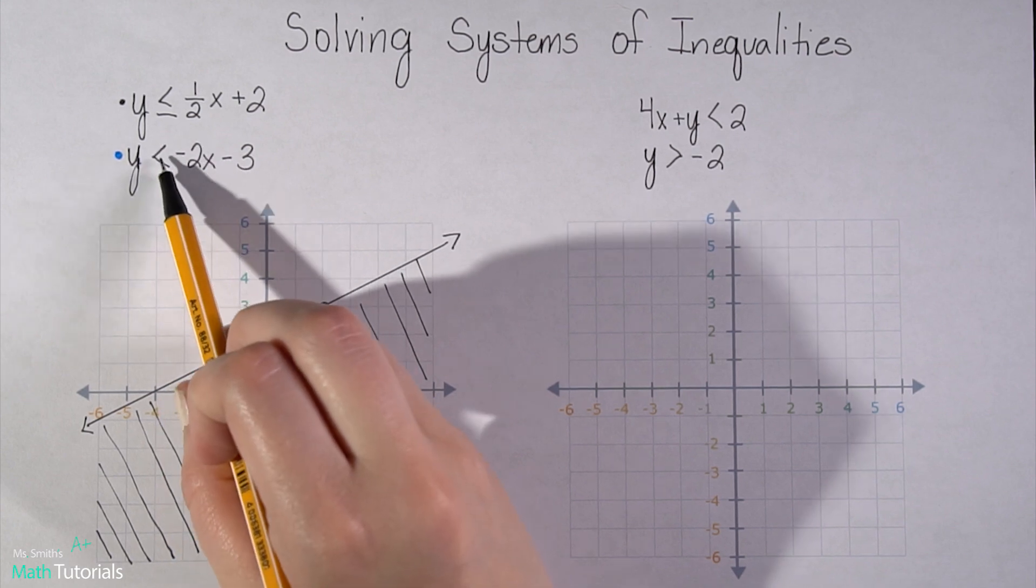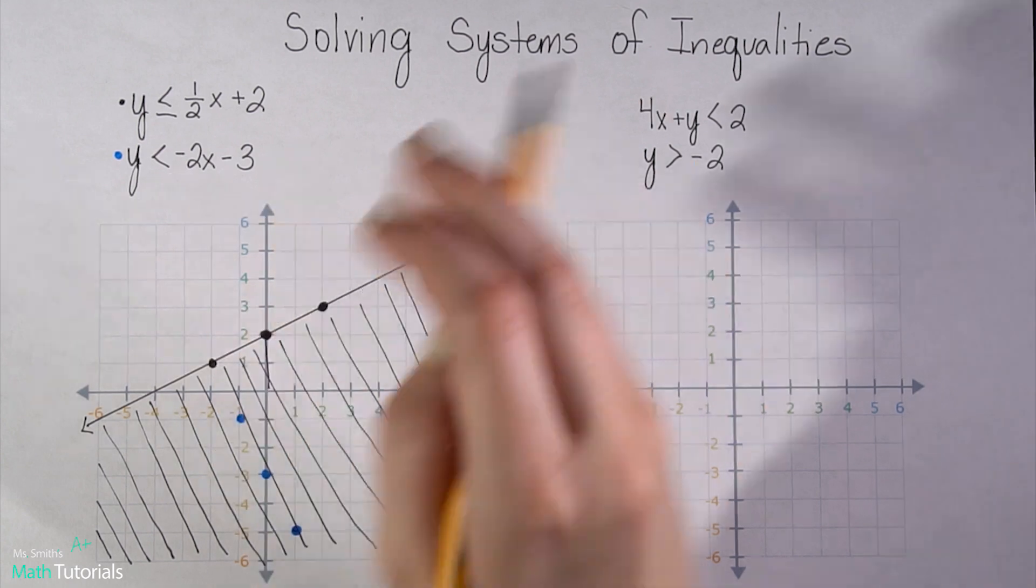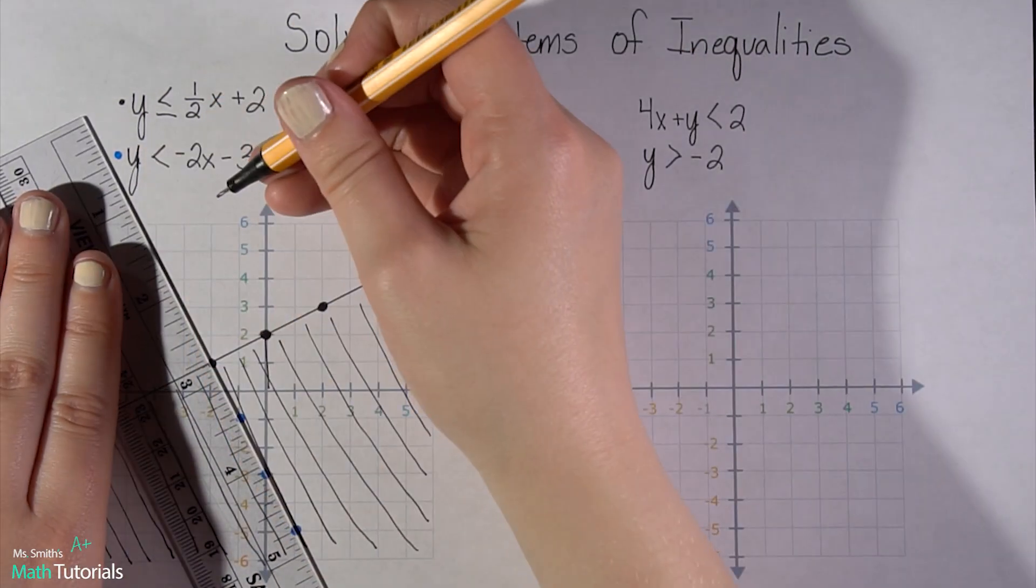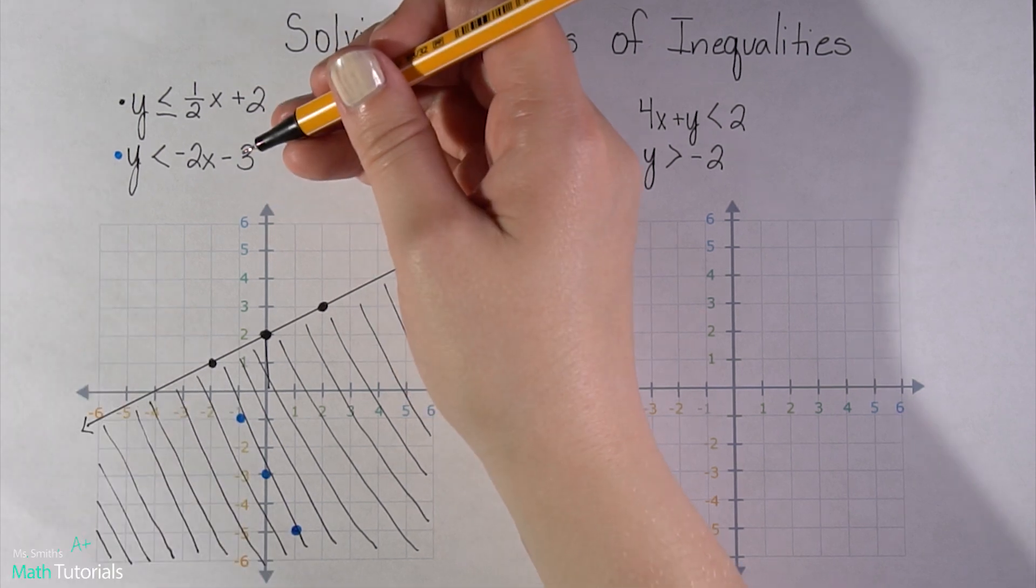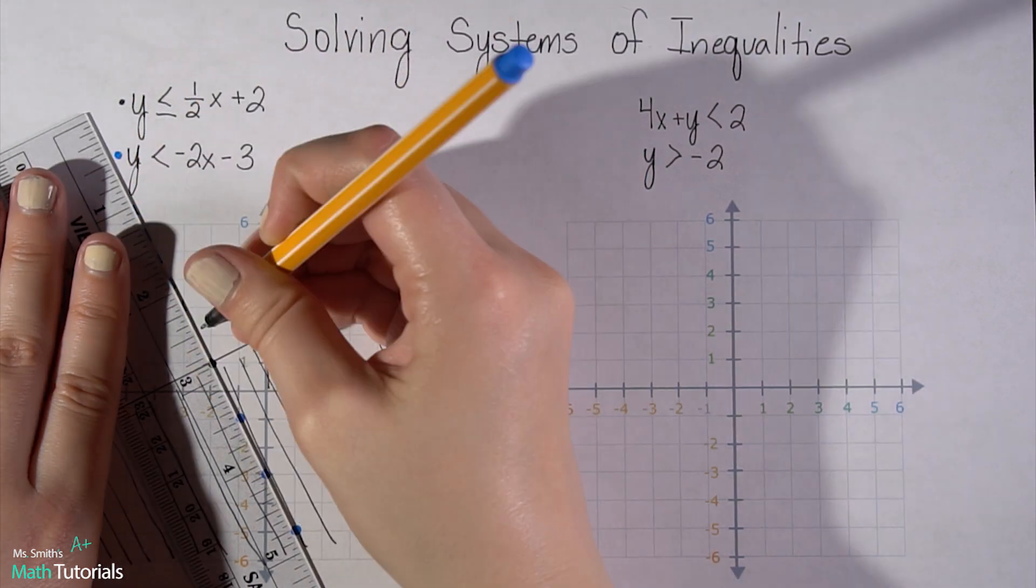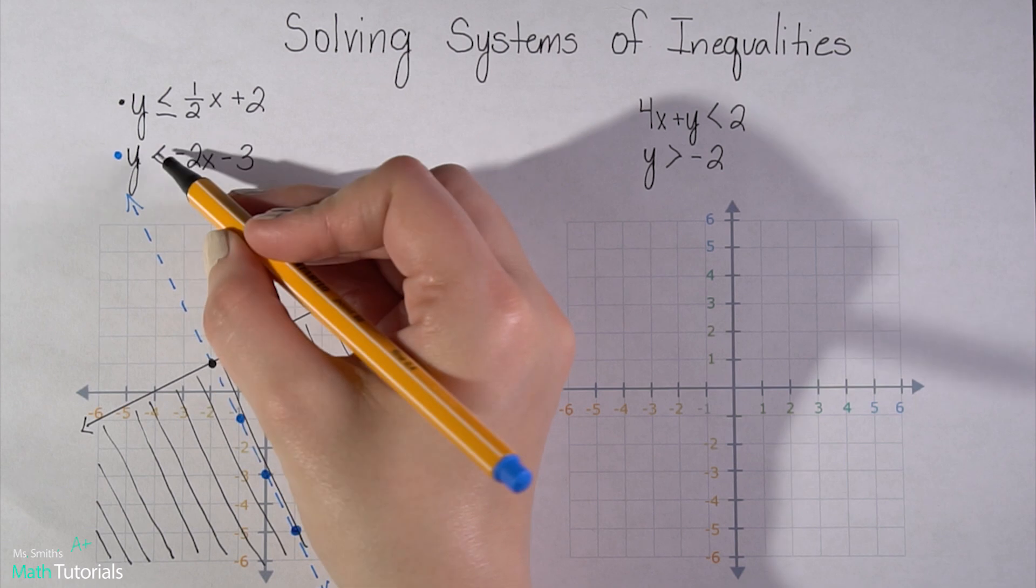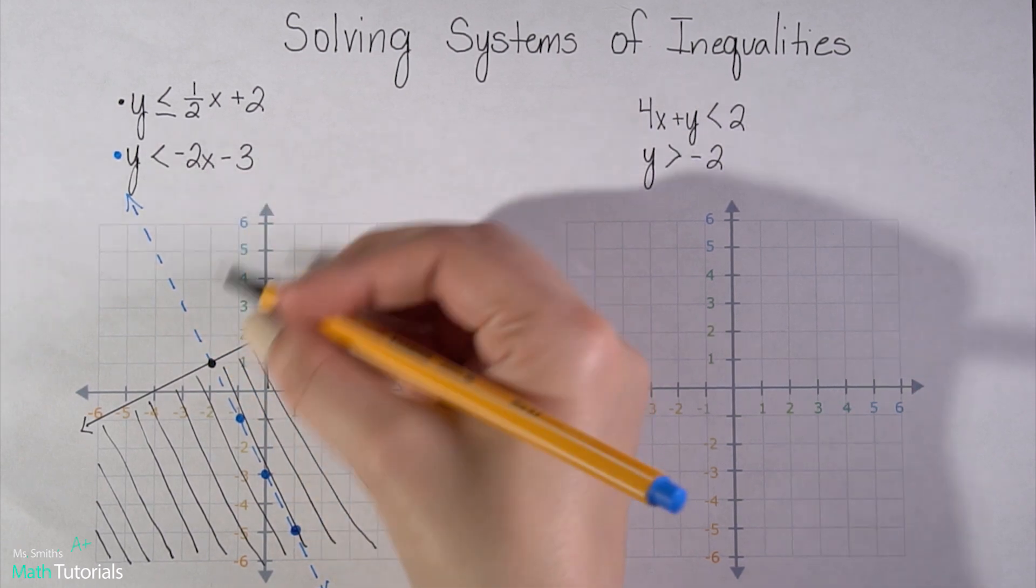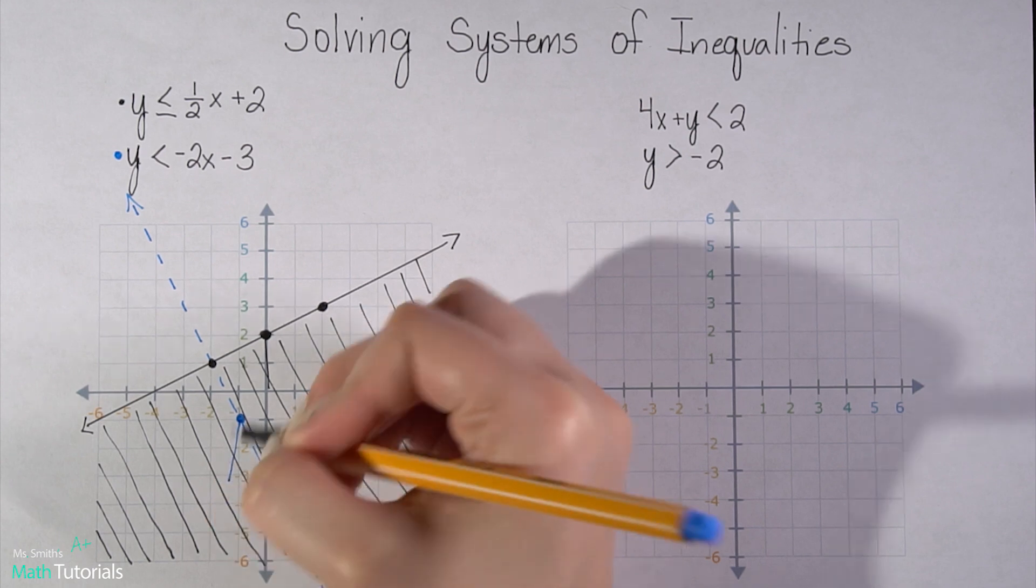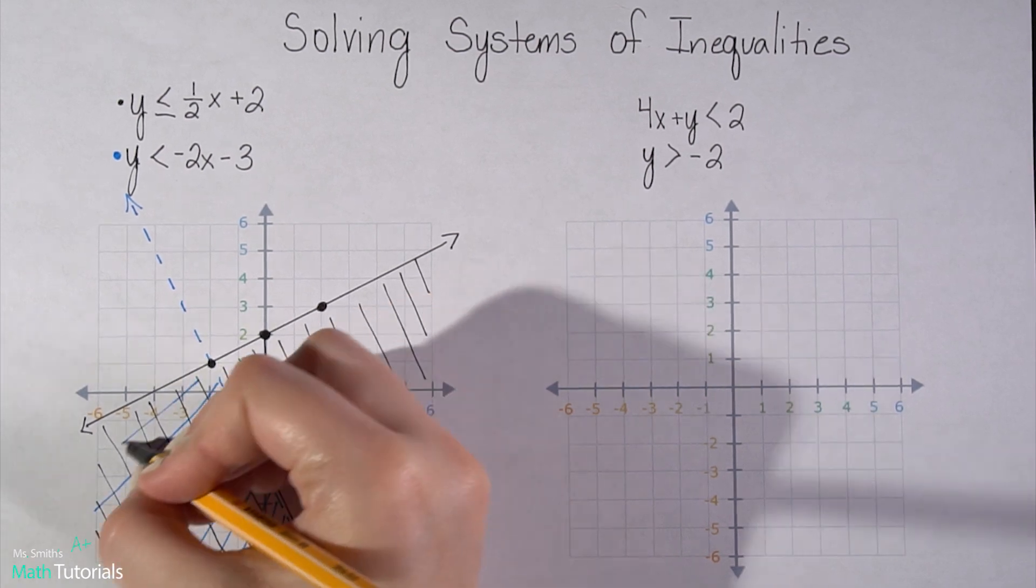So now let's connect these dots. Now you'll notice that this is just a simple less than. It is not a less than or equal to. So I'm actually going to have a dotted line in this case. And since it is a less than, I'm going to put my pen on a dot and move down. So everything below that line is going to get shaded.